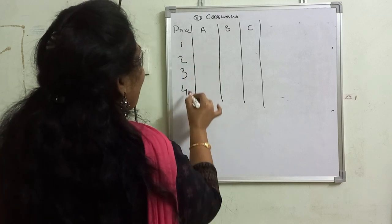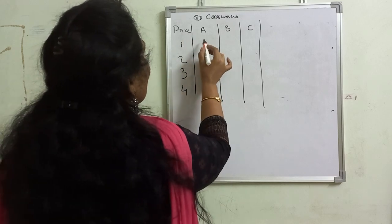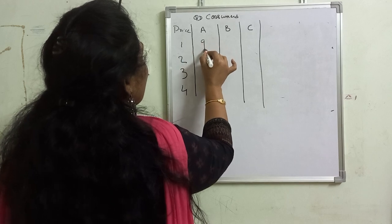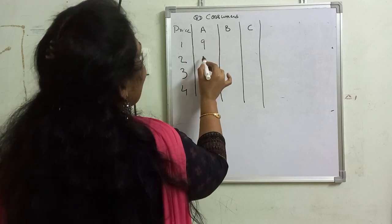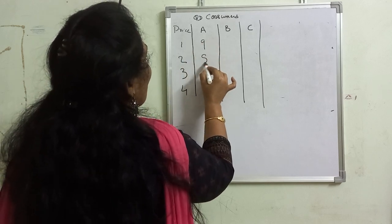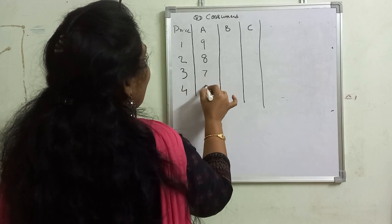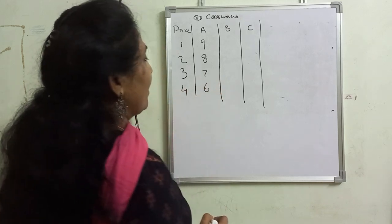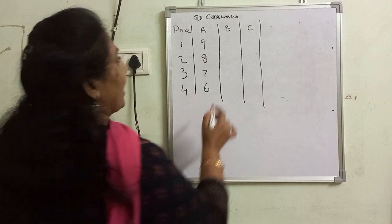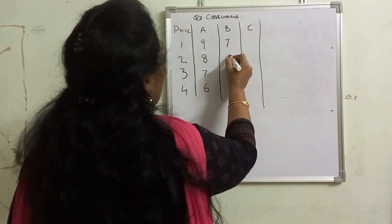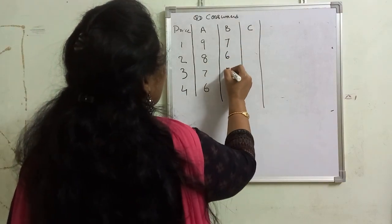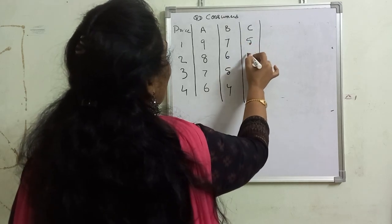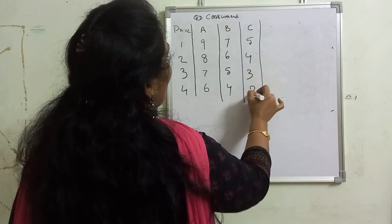Consumer A initially is buying 9 units. As price increases, his demand goes down from 9 to 8, 8 to 7, 7 to 6 units. Consumer B: 7, 6, 5, 4. Consumer C: 5, 4, 3, 2.